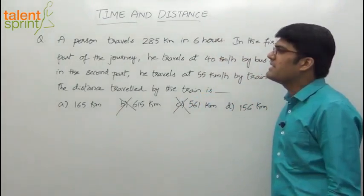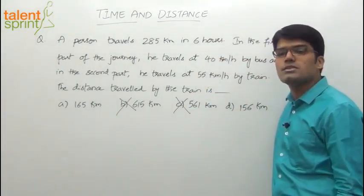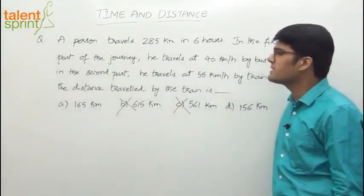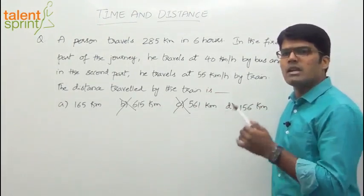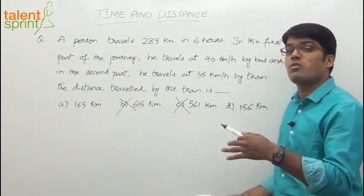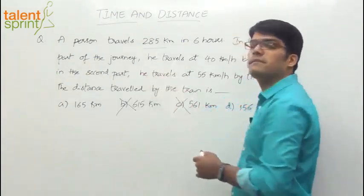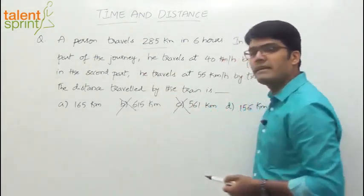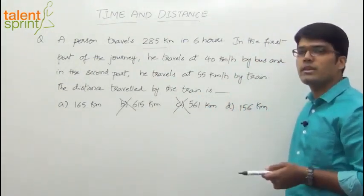Why? The question clearly says that a person travels 285 kilometers in 6 hours. The total distance covered is 285 kilometers. Some part of the journey by bus, the remaining part by train. If your total distance covered is 285, how can the distance covered by train be 615 or 561? Not possible. It has to be less than 285.